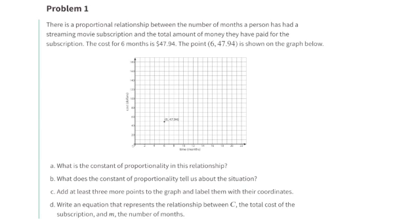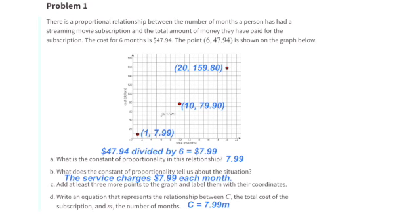Part A: What is the constant of proportionality in this relationship? $47.94 divided by 6 equals $7.99. The constant of proportionality in this relationship is $7.99.